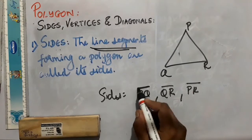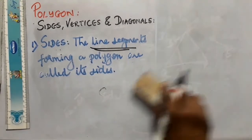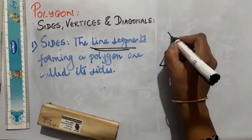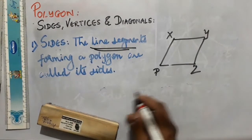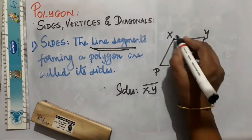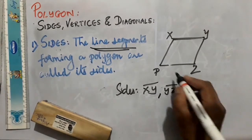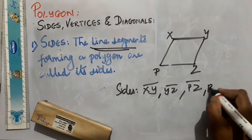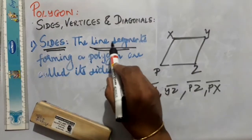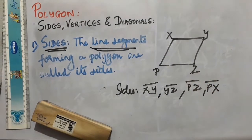Remember to write the line segment correctly. For a quadrilateral XYZP, the sides are line segment XY, line segment YZ, line segment PZ, and line segment PX. So the line segments forming a polygon are called its sides.